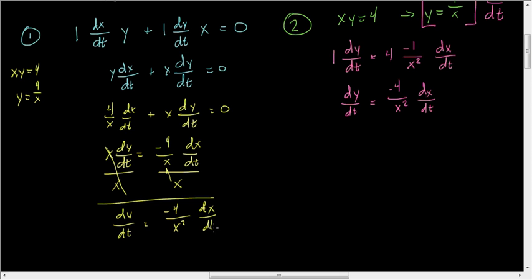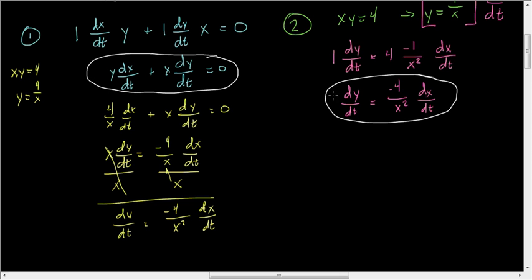So we end up having our negative 4 over x squared dx/dt. Now, again, they look fundamentally different. They are the same thing. That's the danger in calculus, is that you can have the same answer. So if you're checking your answers in a book or something like that, you can have the same answer. It just might look different. So it really amounts to the numbers.